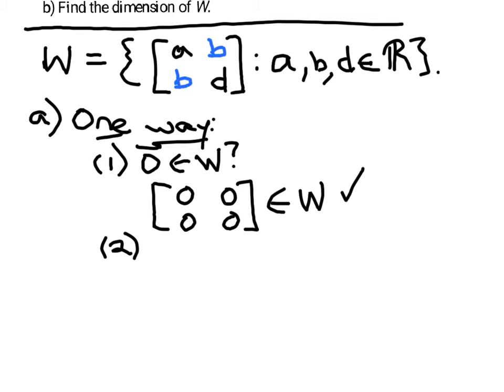The next two conditions are closure under addition and scalar multiplication. So let's take addition first. If you take some symmetric 2 by 2 matrix, I'll use that same general matrix that I wrote up above, and add it to some other symmetric 2 by 2 matrix.